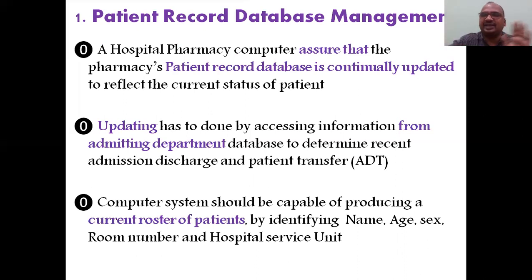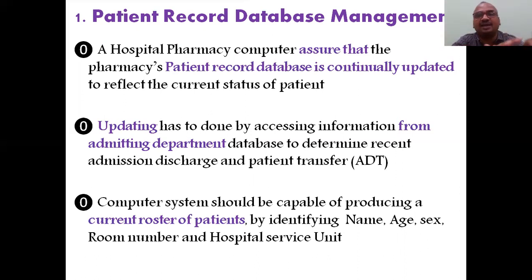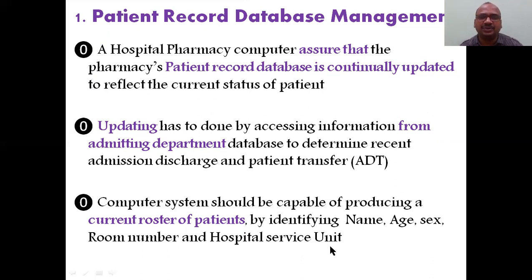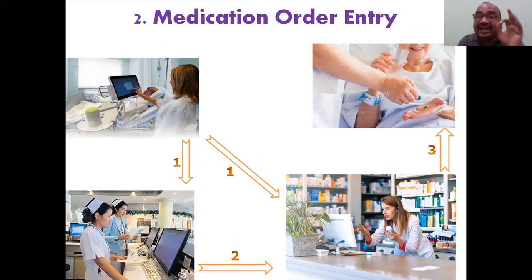Manually updating records is not possible — it takes so much time and effort, searching old files from the store room. But with a computer, if you press a button or enter the patient ID or name, the previous and new history appears automatically and you can take a printout within a fraction of seconds. Updating is done from the admitting department. The computer system should also be capable of producing a current roster of patients.